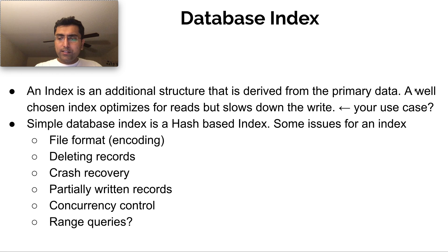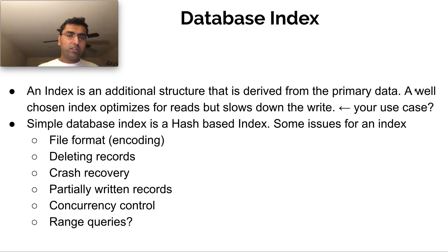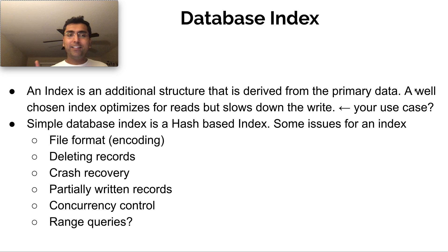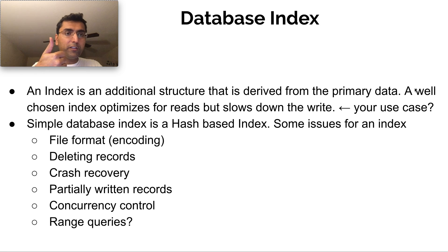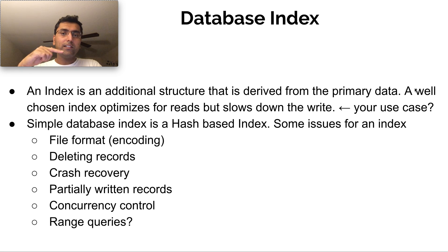Now let's get into what a database index is — a very important concept. An index is a derived entity: from the primary data, you build a secondary data structure which allows you to quickly retrieve information. Like in the phone book, it's sorted by the name, and you stick to that sorting mechanism. Once stored in the best way, you have a data structure to seek data very quickly. Based on your optimizations, you might optimize for reads or for writes. Typically, an index actually slows down writes based on how it's set up, so it depends on the query and your use case.